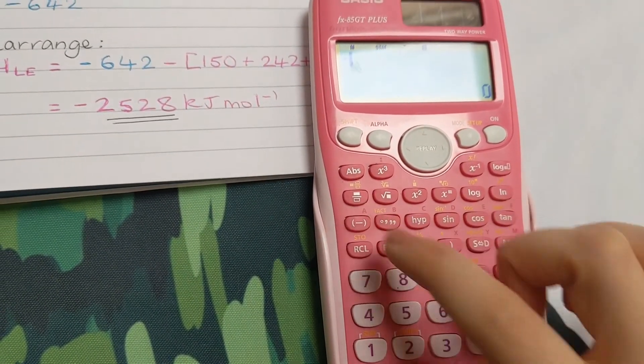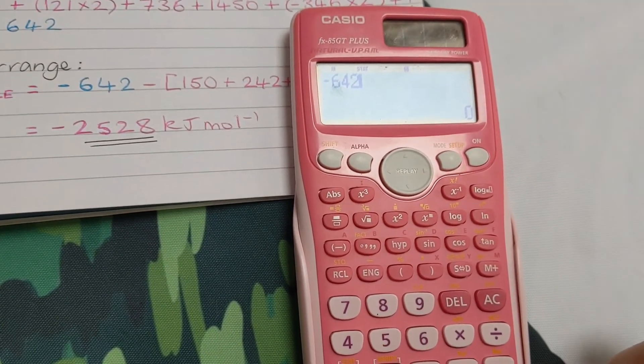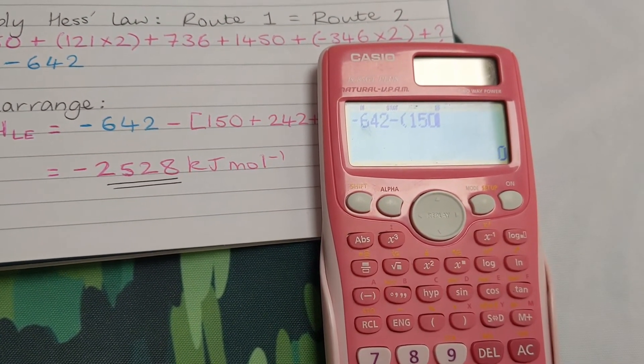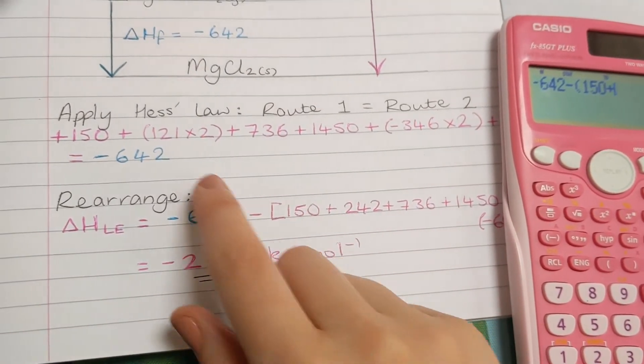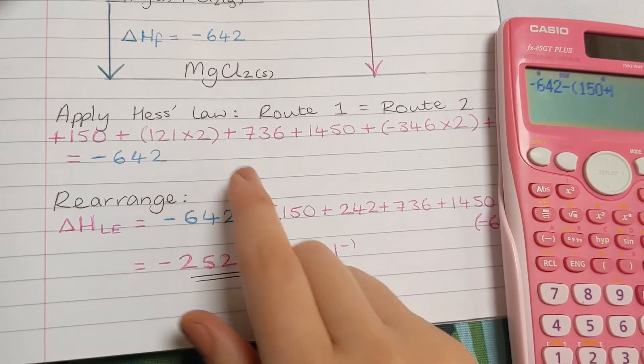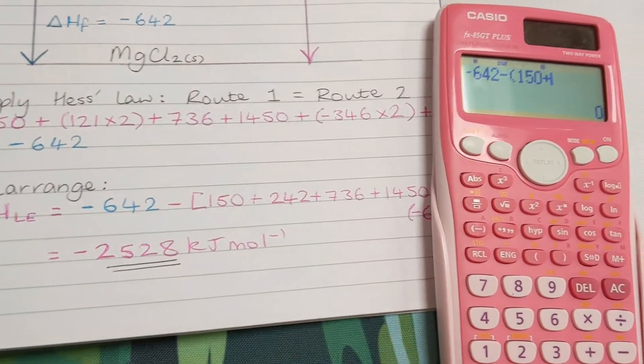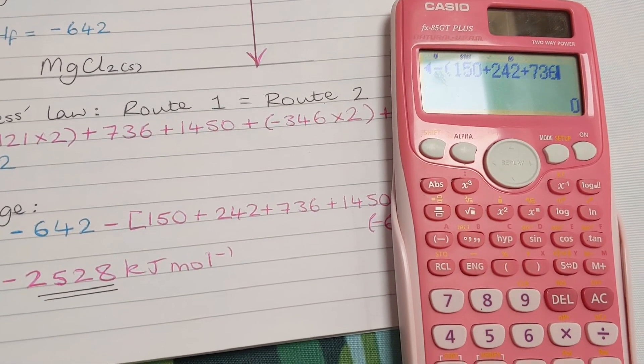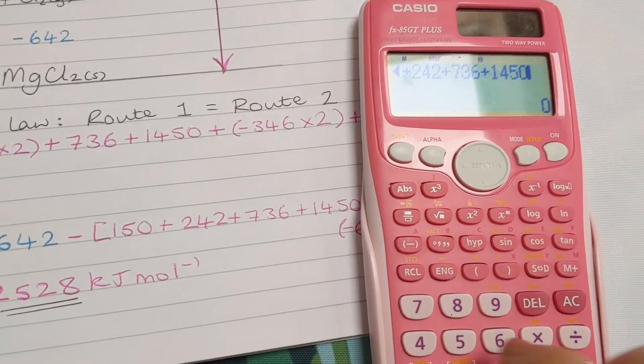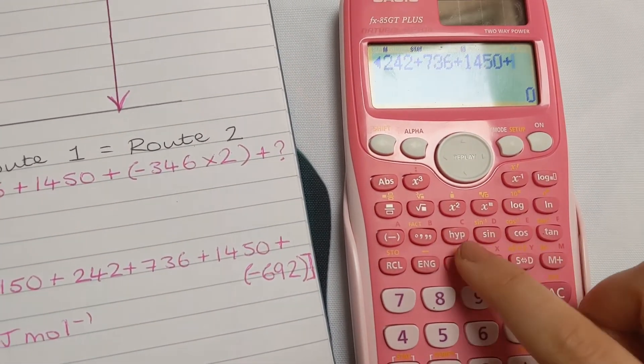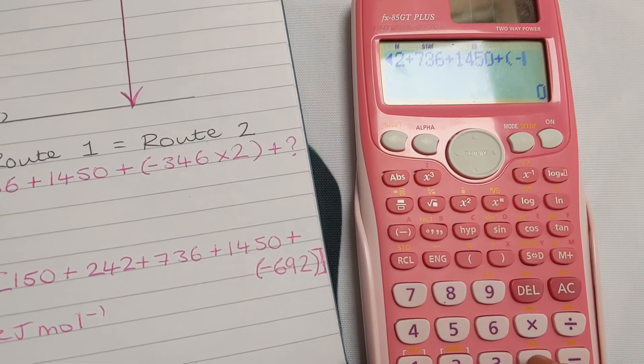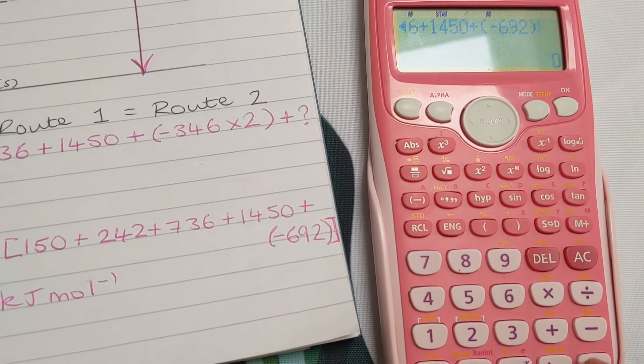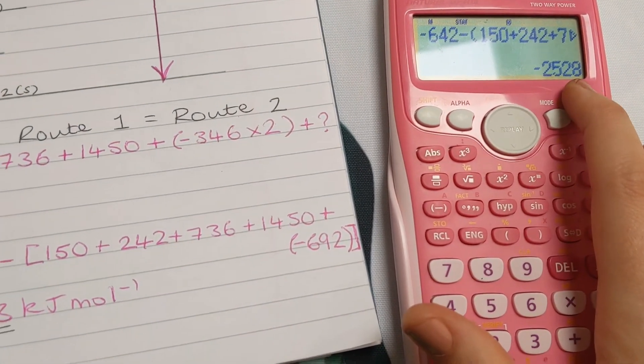Okay, this minus 642 minus brackets 150 plus. So I've done this sum already. This 121 times 2, I've worked it out here. That's 242, that's where that number came from. Plus 736 plus 1450 plus minus 692 equals minus 2,528.